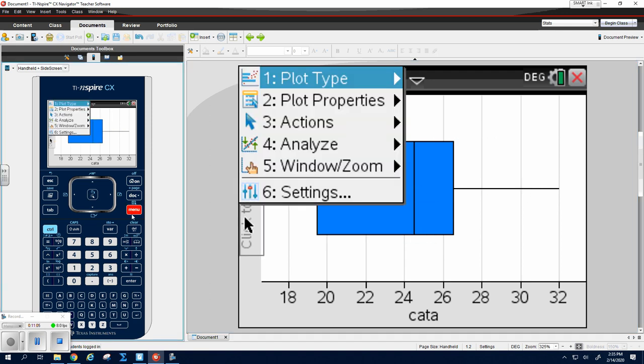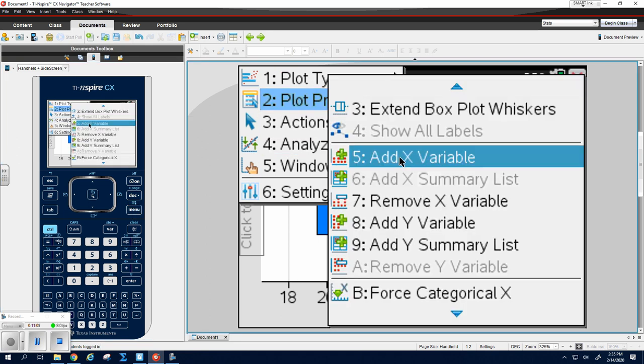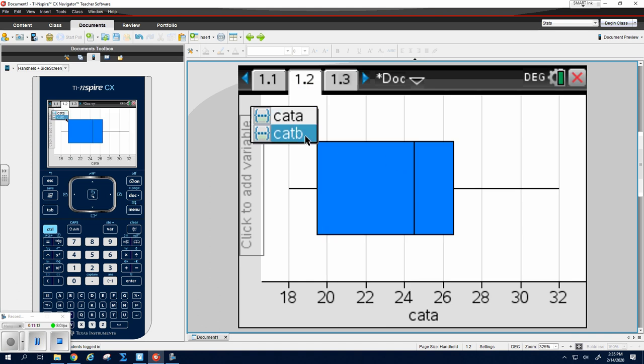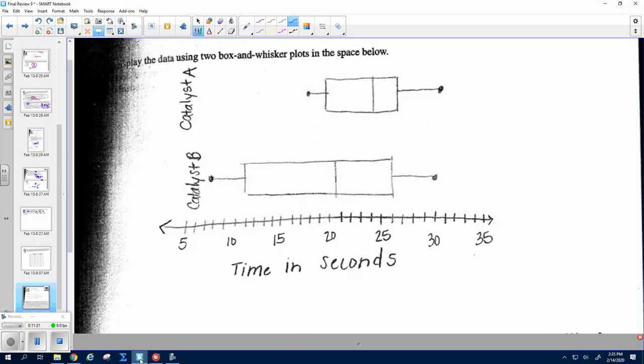Alright, this is cool. If you go to Menu, Plot Properties, and go to Add X Value, you can plot it on the same graph. So now I want Catalyst B. And then they show up side by side, which is just kind of neat, and you can highlight over to get all of your data. That way, you can sketch a nice graph. So don't forget, on the AP exam, you need a title, you need to label your number line, and I would label each of these.